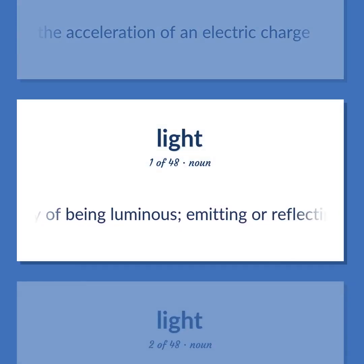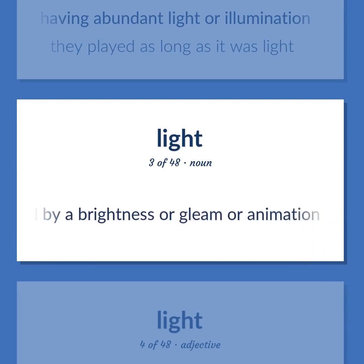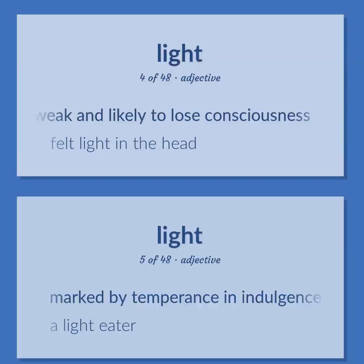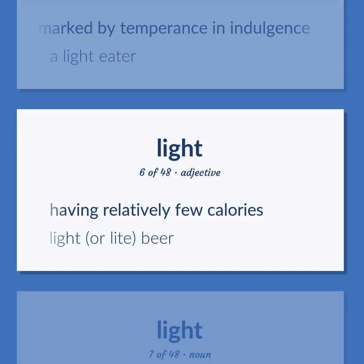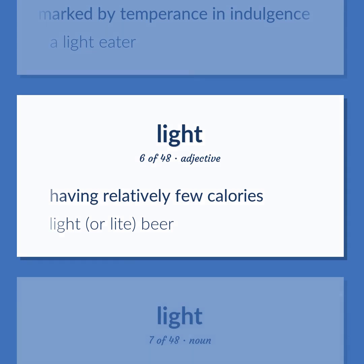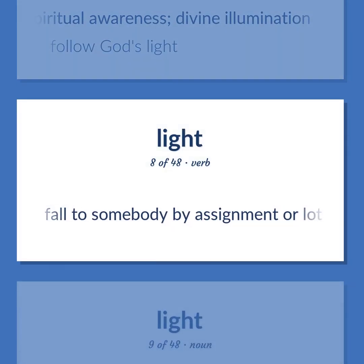Light: the quality of being luminous; emitting or reflecting light. Having abundant light or illumination — 'They played as long as it was light.' Merriment expressed by a brightness or gleam or animation of countenance. Weak and likely to lose consciousness — 'Felt light in the head.' Marked by temperance and indulgence — 'A light eater.' Having relatively few calories — 'Light beer.' A condition of spiritual awareness; divine illumination — 'Follow God's light.' Fall to somebody by assignment or lot.